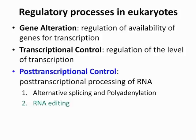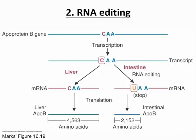Next is RNA editing. The example is the apoprotein B gene. Depending on whether it goes through the liver or the intestine, it makes different amounts of protein. In the liver, apoprotein B gene makes 4,500 amino acids; in the intestine, it makes about 2,100 amino acids. RNA editing is an example of post-transcriptional control.